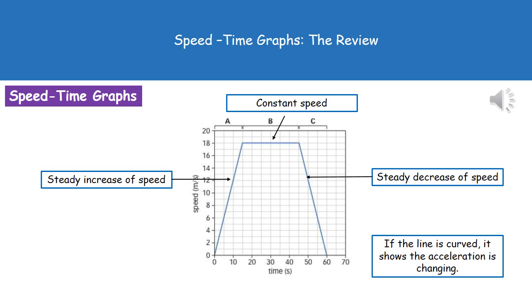So this time if you look carefully at the axis on the graph, you'll see time is still on the x-axis, but this time on the y-axis what we see is speed. Now what that means is that the different forms that our line can take on the graph mean different things.